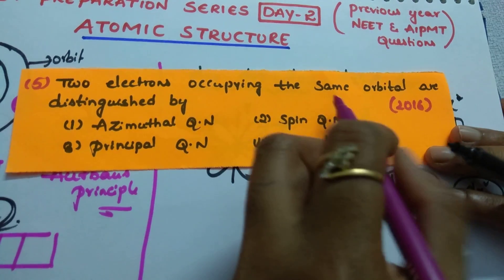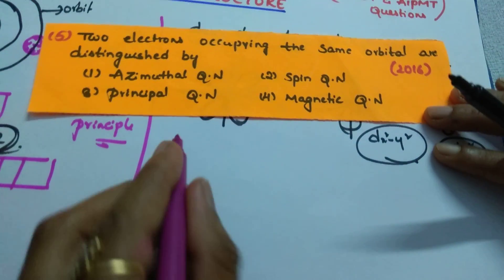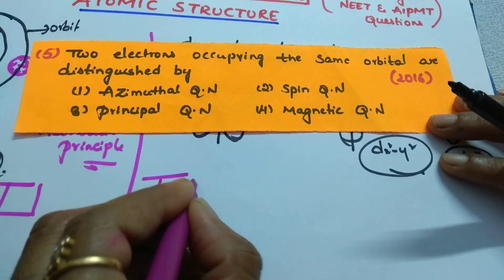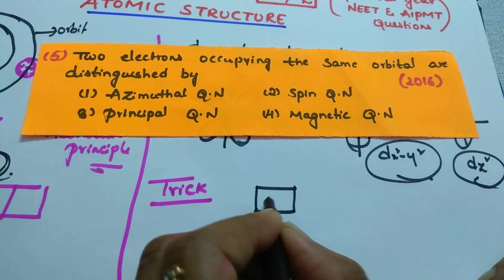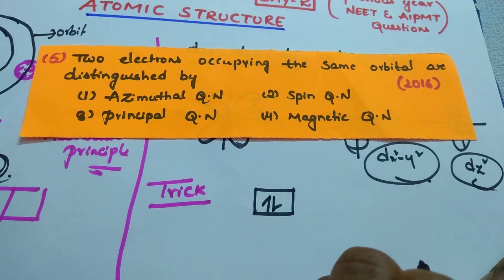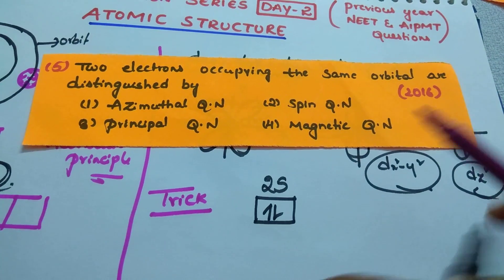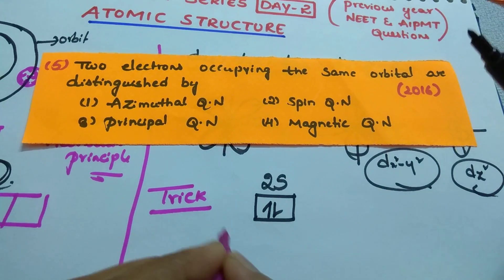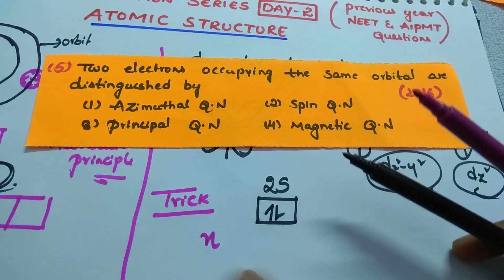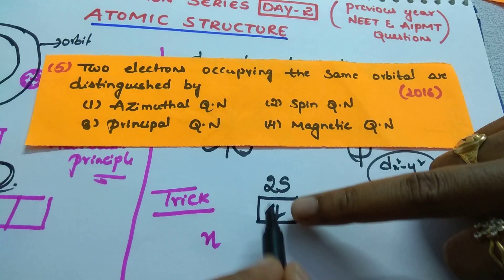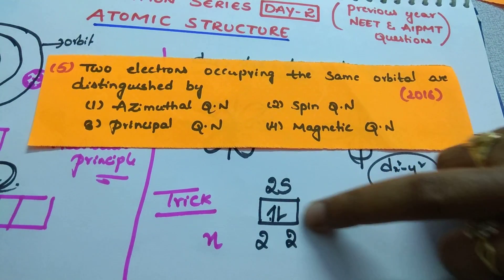2016 question: two electrons occupying the same orbital are distinguished by? I will tell you a small trick to solve this question. For example, take the S orbital, which can accommodate maximum two electrons. Suppose it is 2S. Now write the n value for both electrons in this orbital. The principal quantum number n value for both electrons is 2 — same for both.